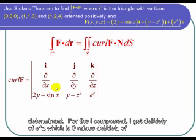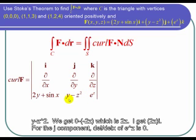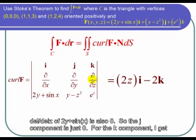For the i component, I get ∂/∂y of e^z, which is 0, minus ∂/∂z of (y - z²). So we get 0, which is positive 2z, which is positive 2z. So I get 2zi. For the j component, ∂/∂x of e^z is 0, and ∂/∂z of (2y + sin x) is also 0. So the j component is just 0.